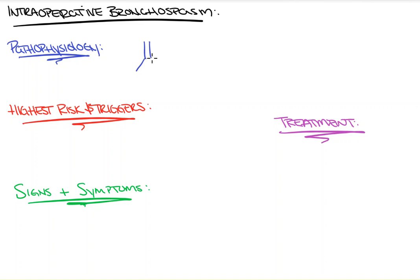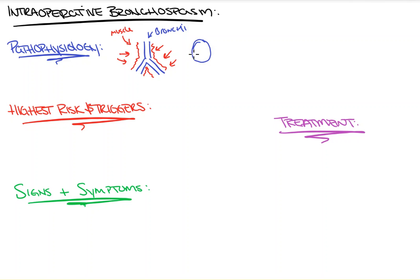Imagine that this is our main stem bronchus and our left and right main stem bronchus. There is a muscular layer that goes all the way around all of our bronchi — that's the muscle layer shown in red. What happens is, due to one reason or another, there is constriction of this muscular layer around the bronchi, which results in your airway lumen getting constricted and squished in, resulting in an airway that is now much smaller.